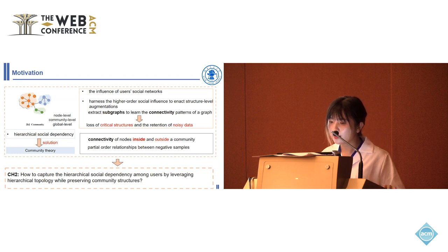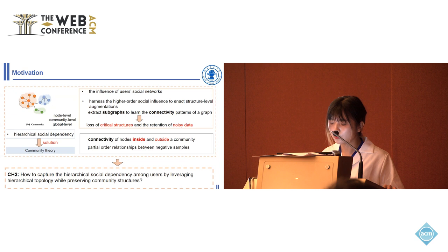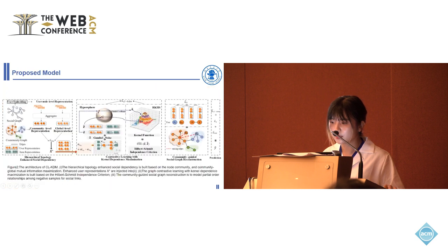However, existing methods can learn the connectivity of nodes inside and outside the community but cannot learn the partial-order relationship between node samples. So, the second challenge is how to capture the hierarchical social dependency among users by leveraging hierarchical topology while preserving community structures.